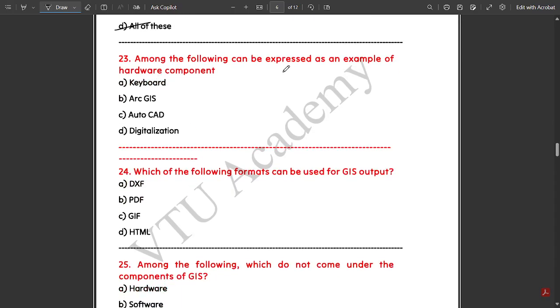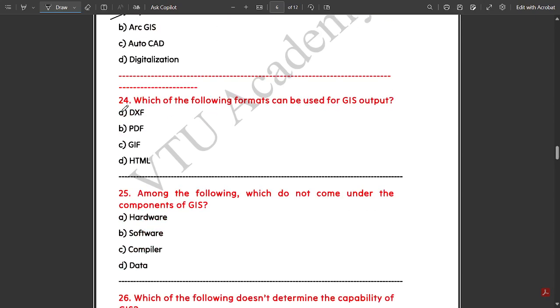They are generally used for vehicle tracking, land navigation, and transport. Among the following, keyboard can be expressed as an example of a hardware component. Which of the following formats can be used for GIS output? The answer is GIF.